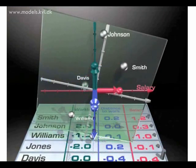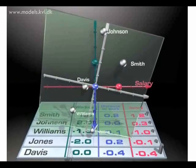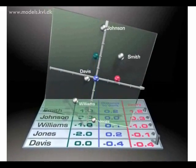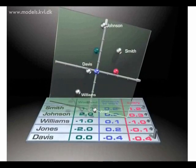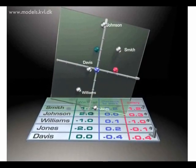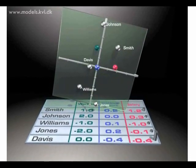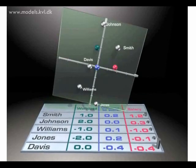We can also project the original three axes into the plane, and that way we can see how the different directions in the plane are influenced by the different variables. And this is the bi-plot, which is one of the most common results of doing a PCA, and which we'll look at in more detail now.